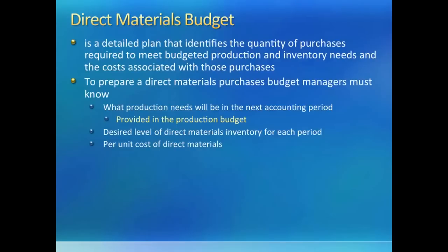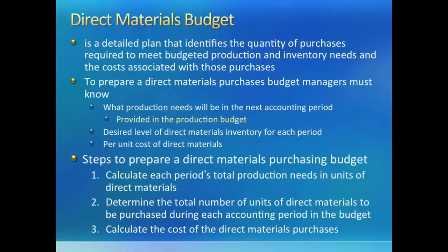Just like we talked about finished goods inventory in the production budget, here we will talk about raw material inventory. The company may want to keep inventory to avoid stock outs or to account for spoilage. Once we calculate how many units of raw material need to be purchased, we can multiply it by the expected price of raw material to figure out how much direct material will cost each month. We will start with production needs for each month, calculate direct material needed in units, and then calculate it in dollars.